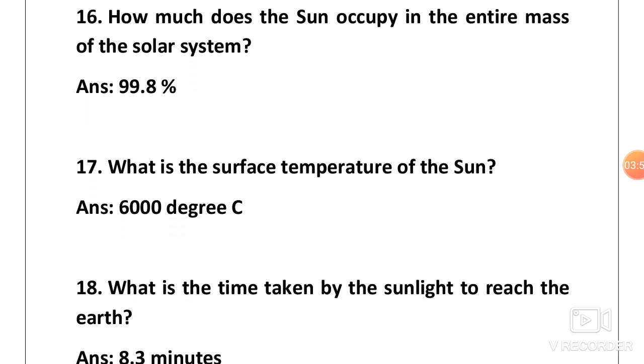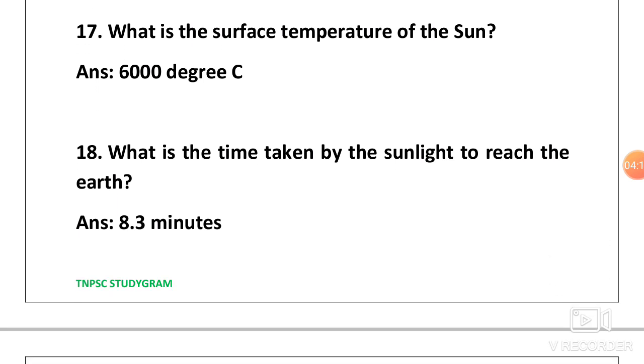Next one, how much does the sun occupy in the entire mass of the solar system? Answer is 99.8%. Again, here to remember, we have digits which are multiple of 11. 99 followed by a digit less to 9 that is 8. So 99.8%.